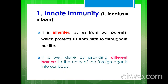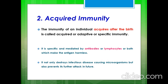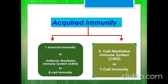Innate immunity is inherited by us from our parents, which protects us from birth throughout our life. It works by providing different barriers to the entry of foreign antigens into our body. Acquired immunity of an individual occurs after birth. It is specific and mediated by antibodies or lymphocytes or both, which makes the antigen harmless. It not only destroys infectious disease-causing microorganisms but also prevents further attack in the future. Acquired immunity can be classified into two types: humoral immunity and cell-mediated immunity. Humoral immunity is also known as antibody-mediated immune response or B-cell immunity, whereas cell-mediated immune response is also known as T-cell immunity.